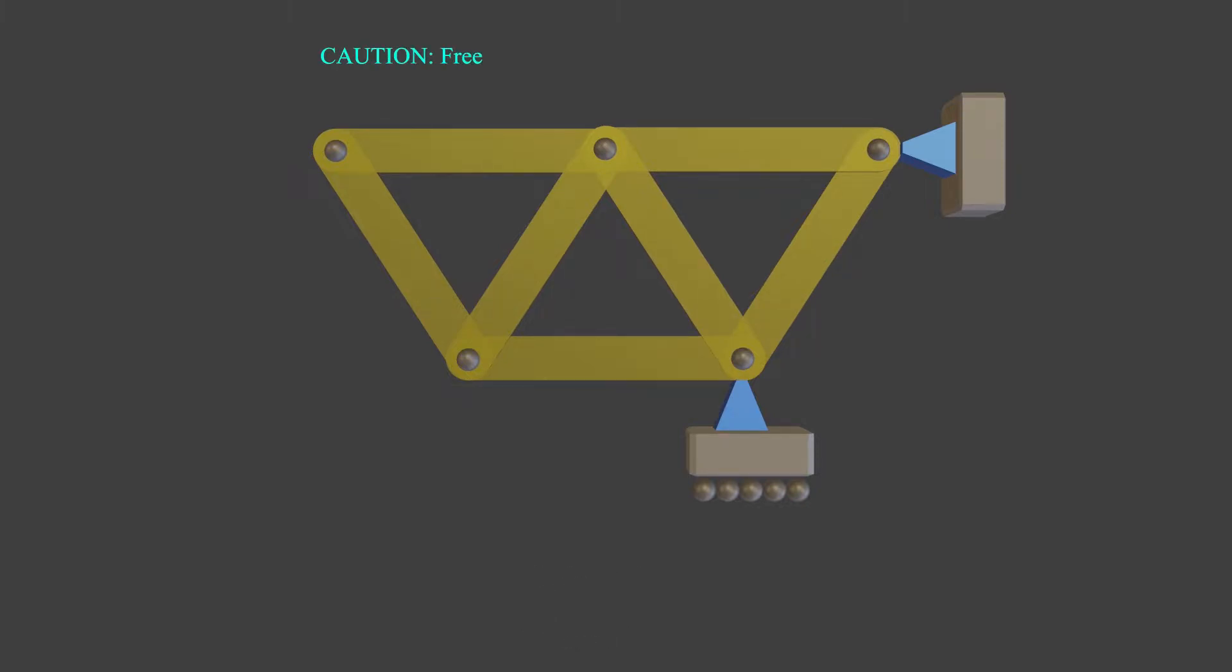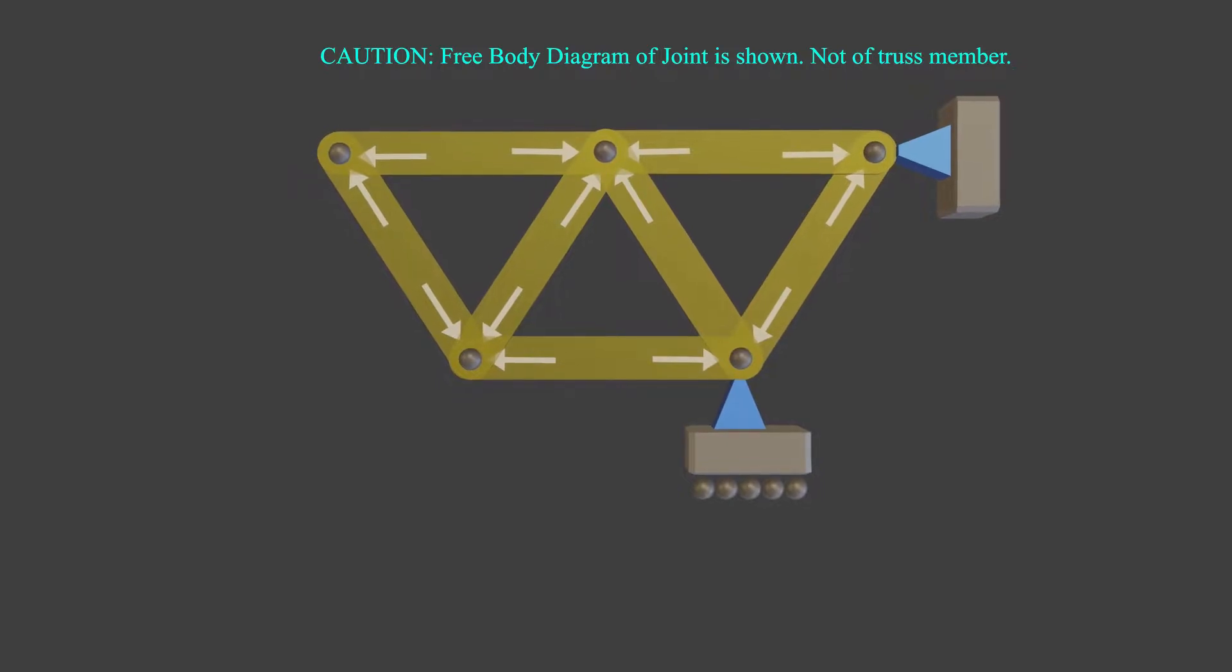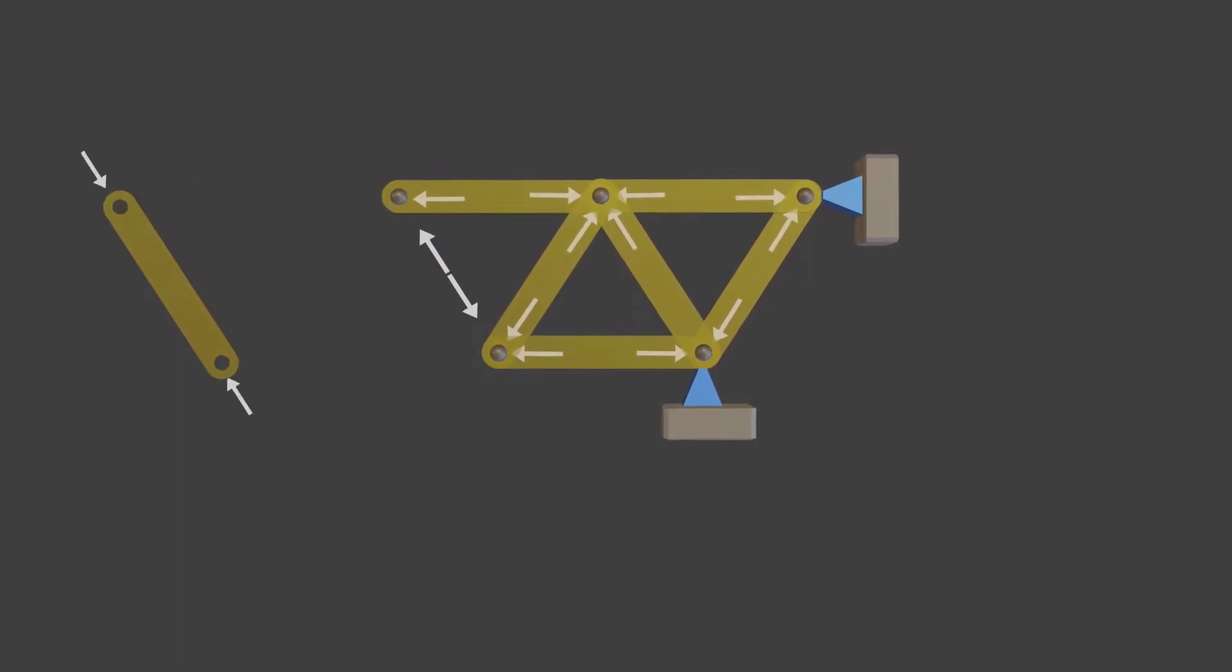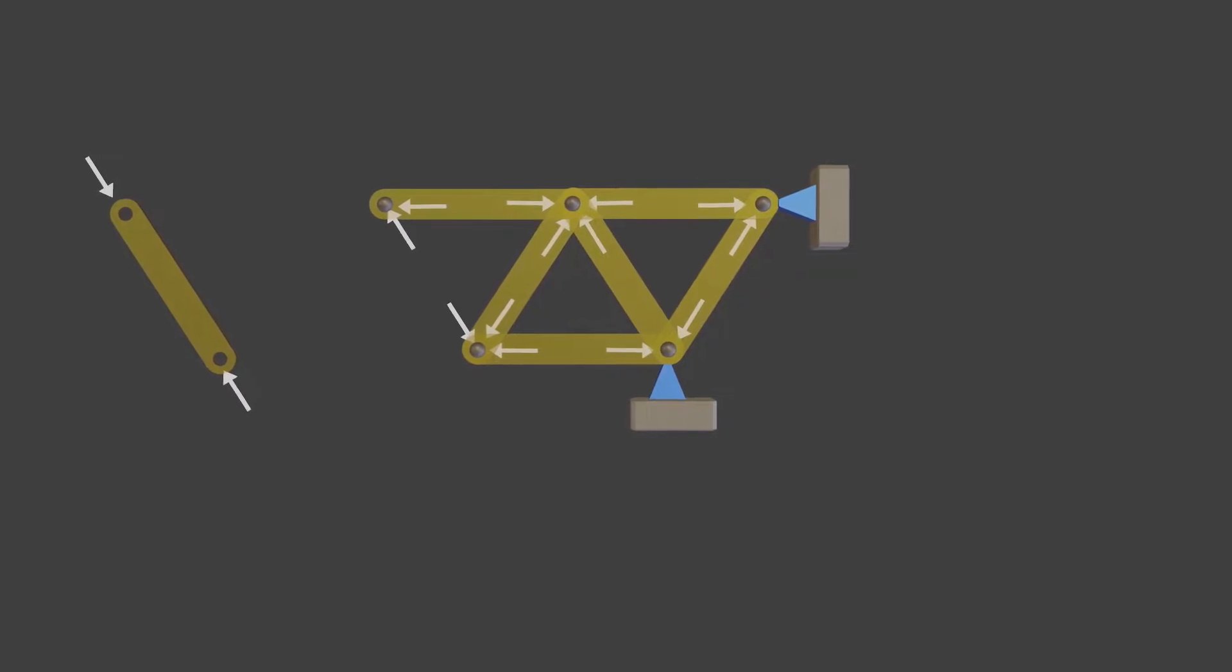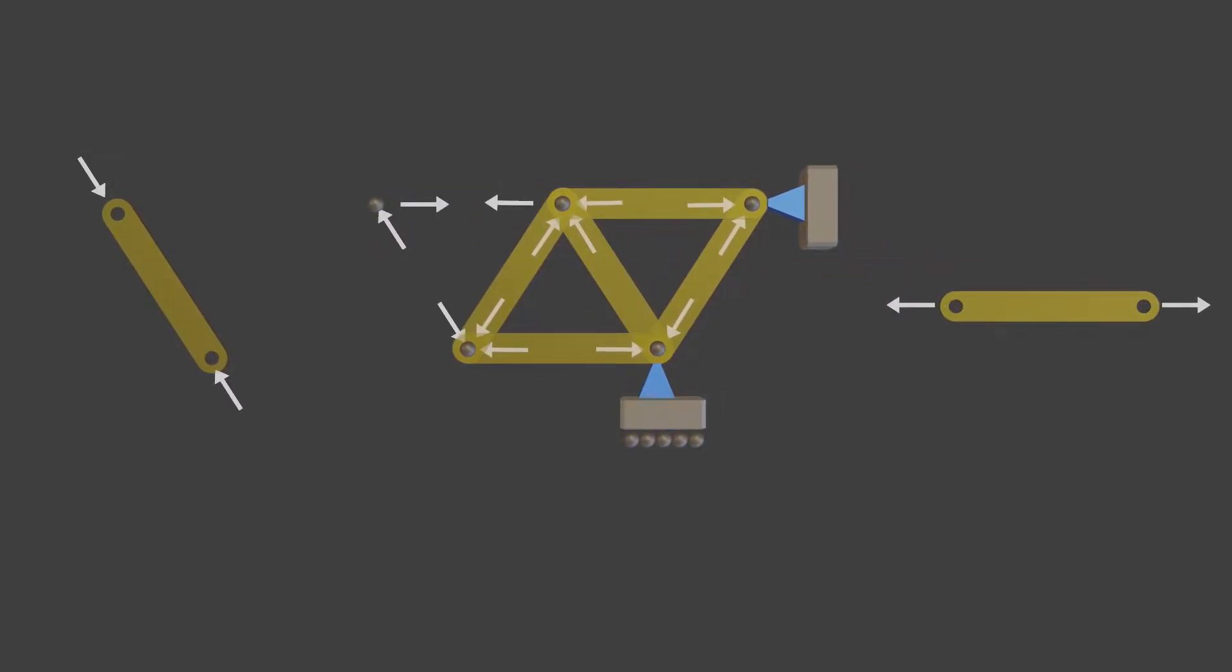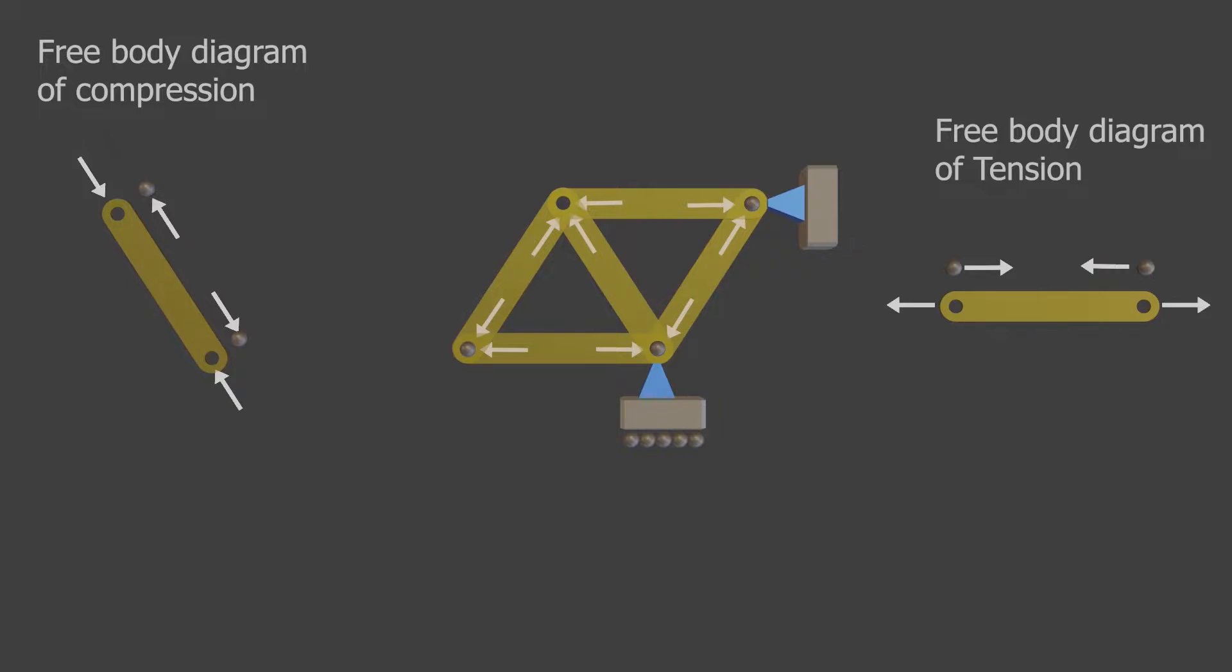In equilibrium, each joint of truss is either in compression or tension. A force pulling on a joint is caused by tension in a member, and a force pushing on a joint is caused by compression. A member in compression pushes on the joint, and a member in tension pulls on the joint. Remember this free body diagram of compression and tension state. You shall need this for analysis of trusses using the method of joints.